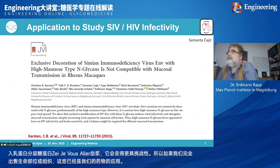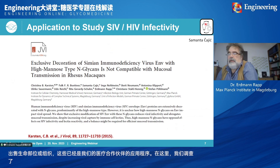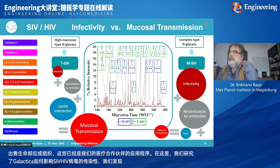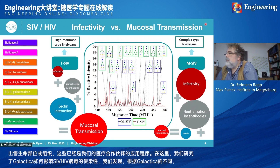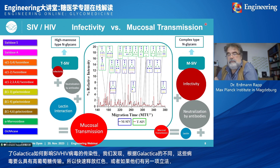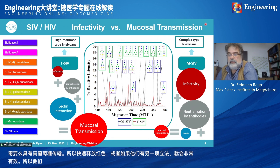Here we investigated how glycosylation affects the infectivity of HIV viruses. What we found is that depending on the glycosylation, these viruses either have high mucosal transmission — they spread rapidly — or, with another glycosylation pattern, they are highly infective. And of course, the worst case scenario is when you combine both.